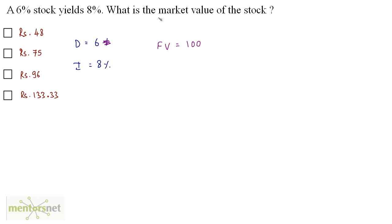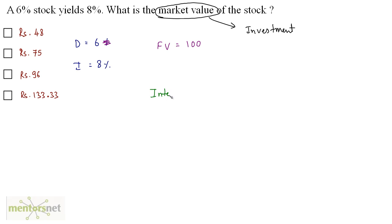Market value is the value of the share at which it is purchased — basically, this is the investment. Now, what is interest? The formula for interest: interest percentage is equal to the gain upon the investment times 100. How much you gain upon how much you invest times 100 gives you the interest.